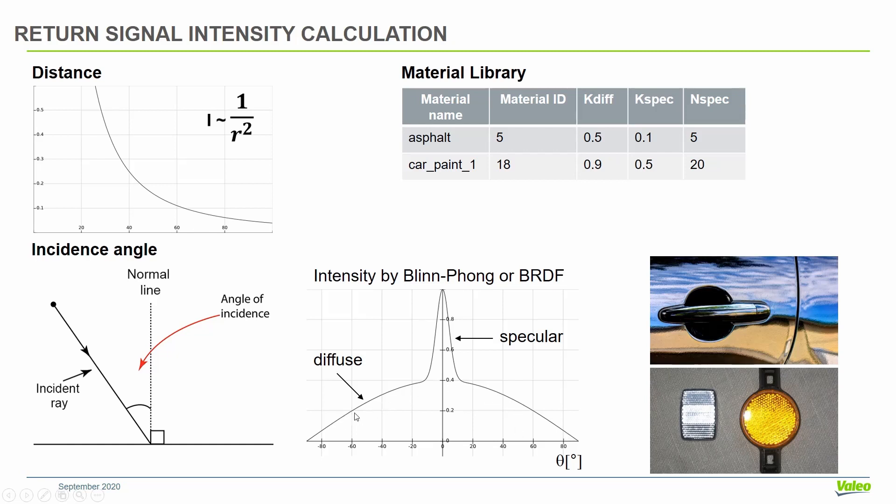And with this angle, we can calculate the intensity dependent on this angle. We can model the diffuse part and the specular part, this sharp peak. We can do this using any model you want. You can use the Blinn-Phong model, which is common in computer graphics, or you can use the BRDF model.